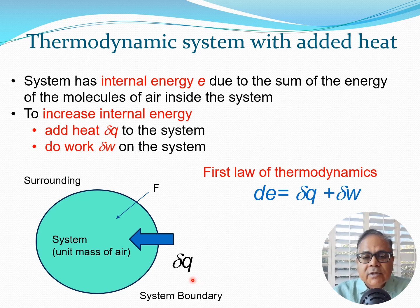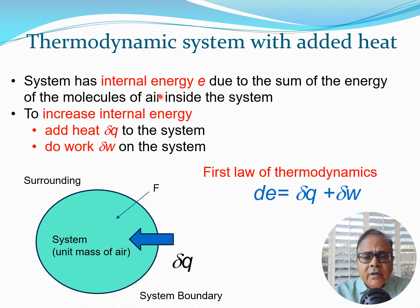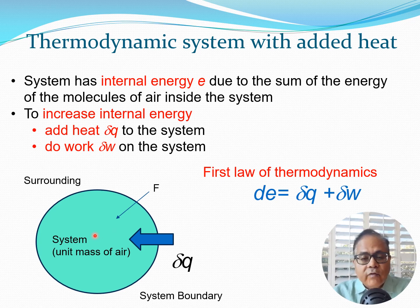What we bring into this system is delta q, which is heat. We can add heat to the system. Also, if we apply a force on the system and there is some motion — some distance s — we do work on the system. The system has something known as internal energy, denoted by e. This energy comes from all the molecules of air present, which are moving around, and their cumulative energy totals the internal energy of the system.